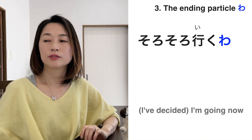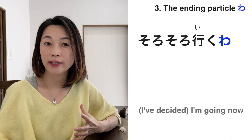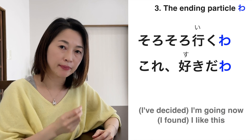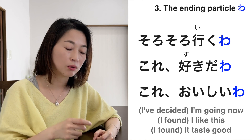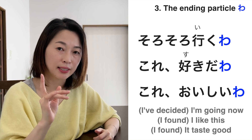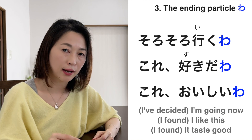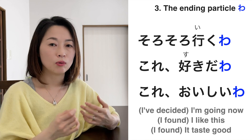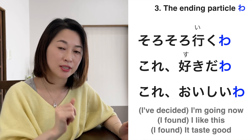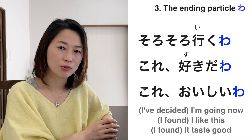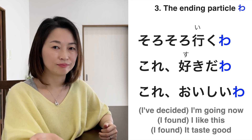Now let's move on to wa. Wa doesn't mean much — it just adds that you've decided something or that an idea is yours. For example, sorosoro iku wa means I'm going now. Or after eating something you could say kore suki da wa or kore oishii wa. Intonation is important — if you say them with a rising intonation, you sound very feminine. Even I don't say that because it's too feminine.